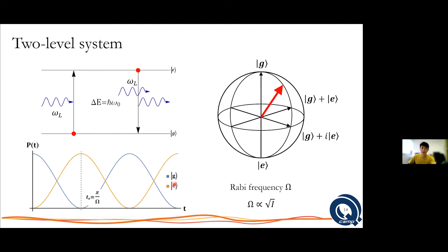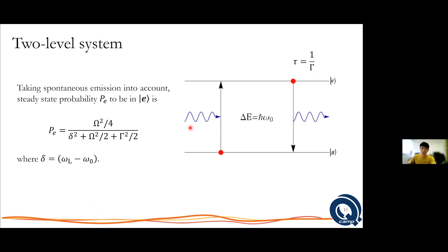The more intense the light you send in, the faster this flop occurs. There is a point where the probability to find the atom in the ground state is completely zero and it has unity probability to be in the excited state — this is called the pi time. Note that this does not take into account spontaneous emission. If the electron is in some excited state, after some time it should decay spontaneously, and accounting for that requires some serious work, which I omit the details of here.